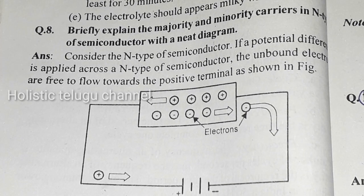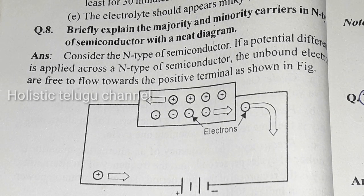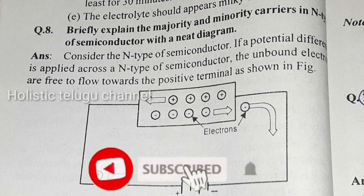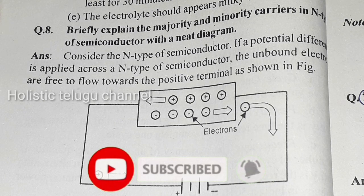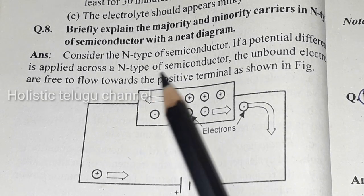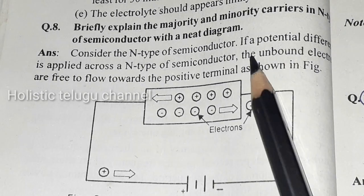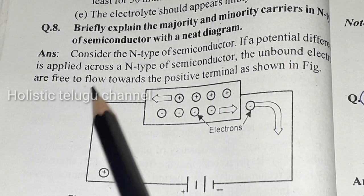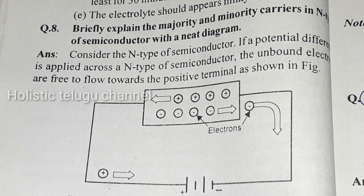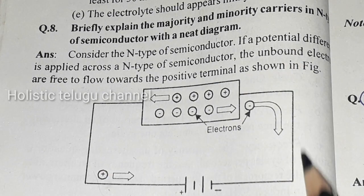Next question: explain conduction in N-type semiconductor with a neat diagram. Consider an N-type semiconductor. If a potential difference is applied across an N-type semiconductor, the unbound electrons are free and flow towards the positive terminal, as shown in the figure. Here we have a diagram of the semiconductor.